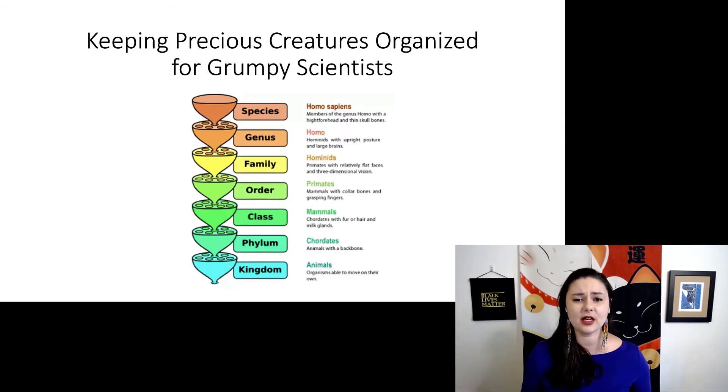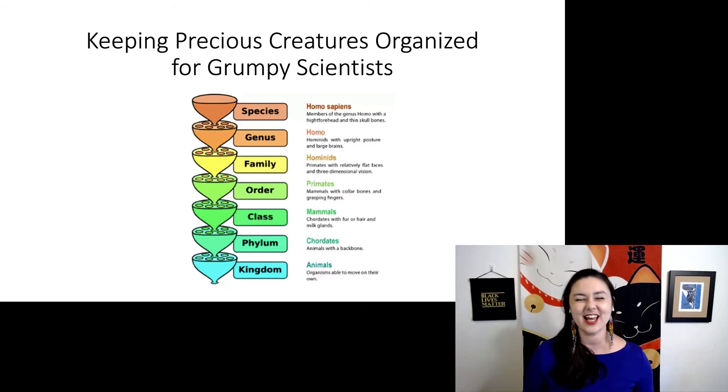If it helps you keep this remembered, this diagram just has it flipped. Now we have our species at the top, our kingdom at the bottom. If you want a mnemonic to help you remember, it's keeping precious creatures organized for grumpy scientists. And yeah, I'm one of those grumpy scientists.